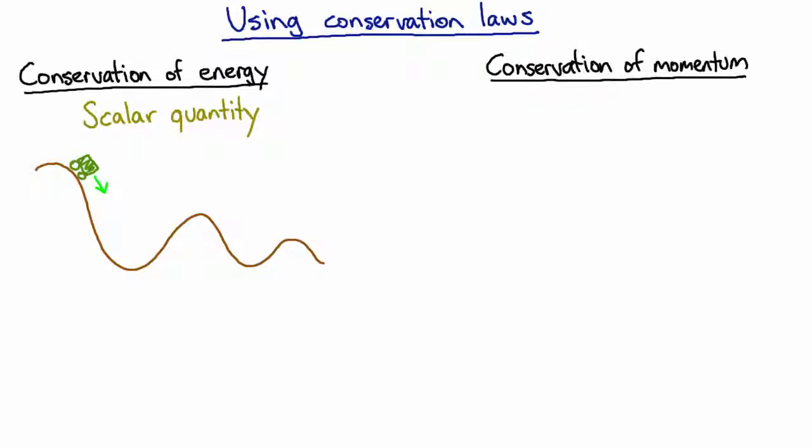Conservation of momentum would be terrible for this problem because momentum is a vector quantity. The force of gravity and the normal force from the roller coaster will be changing the trolley's momentum all the time.